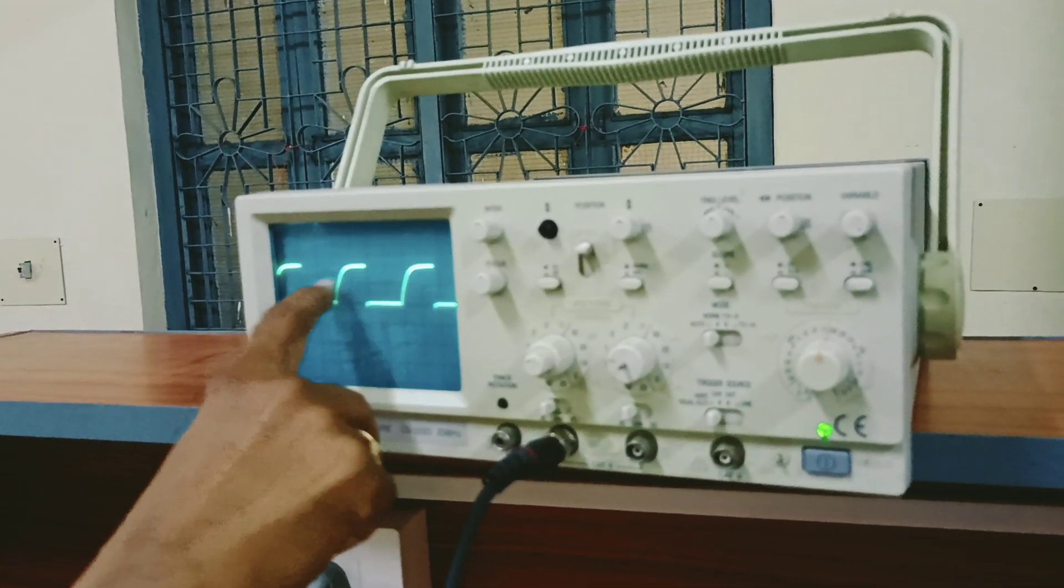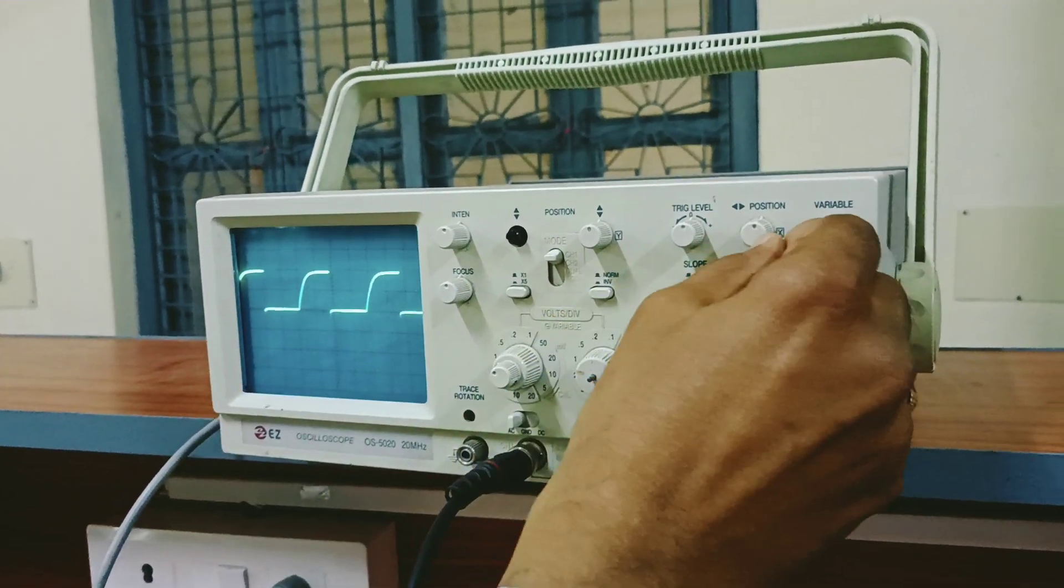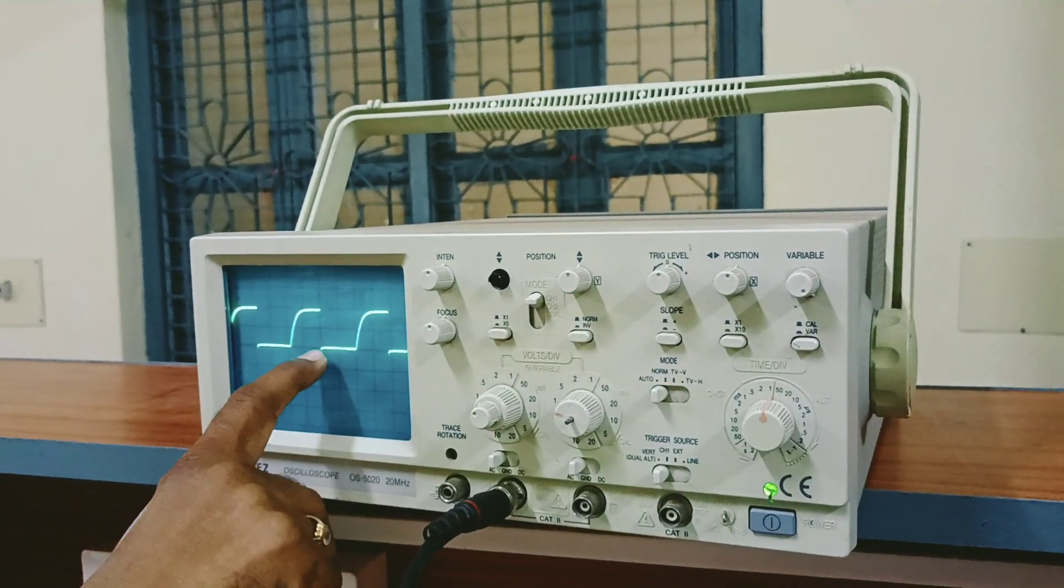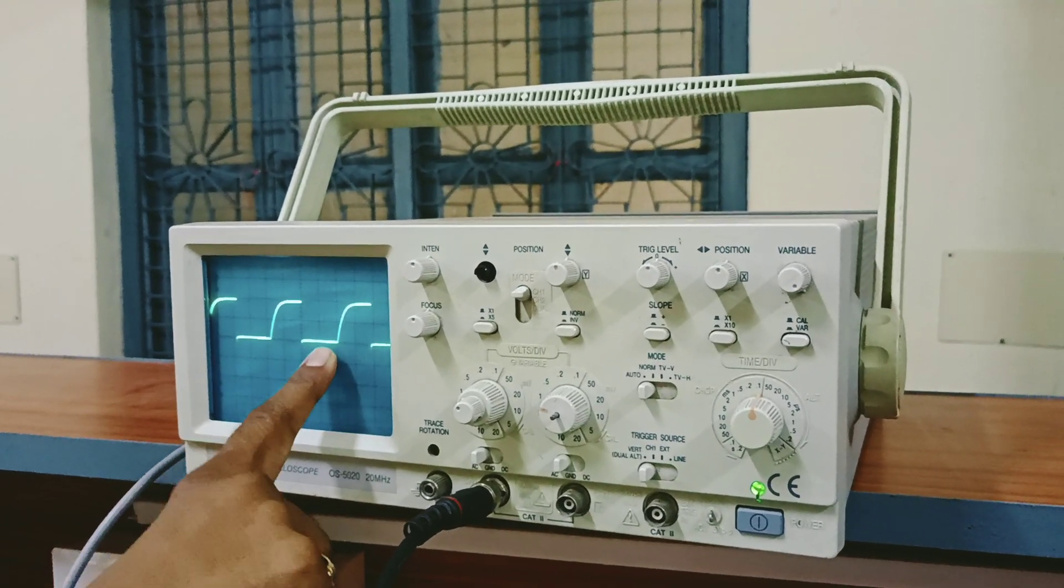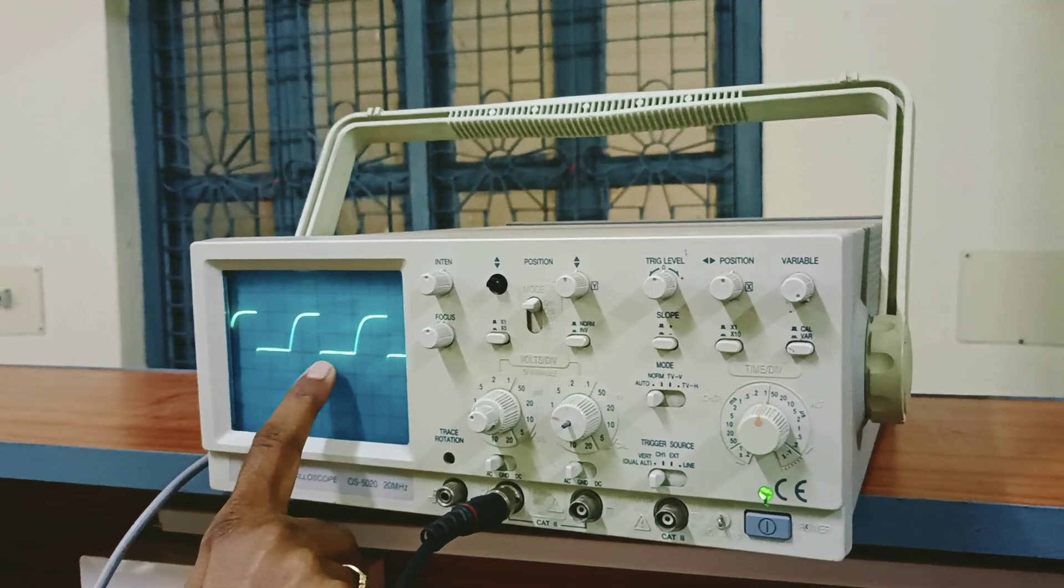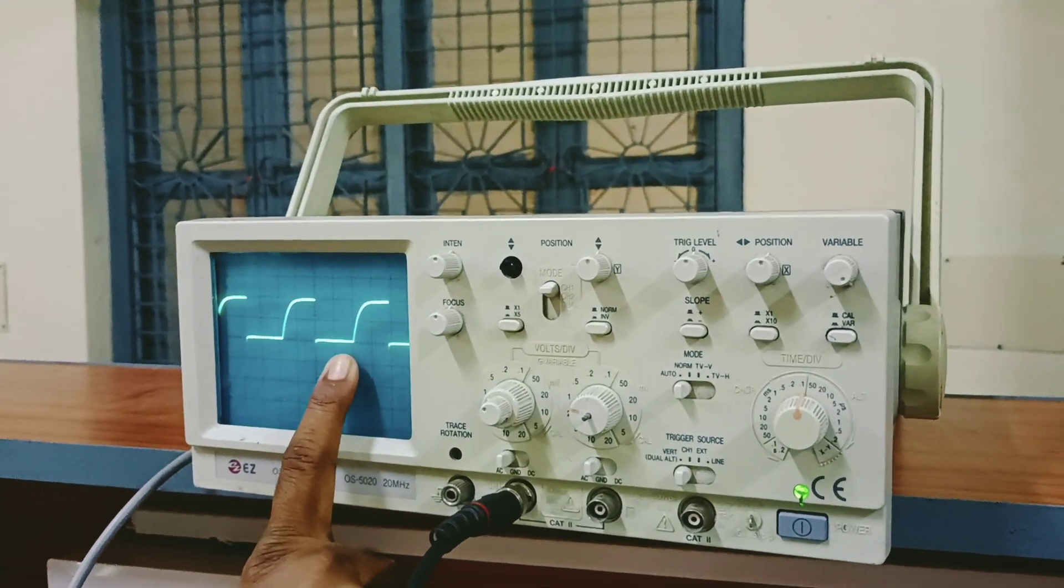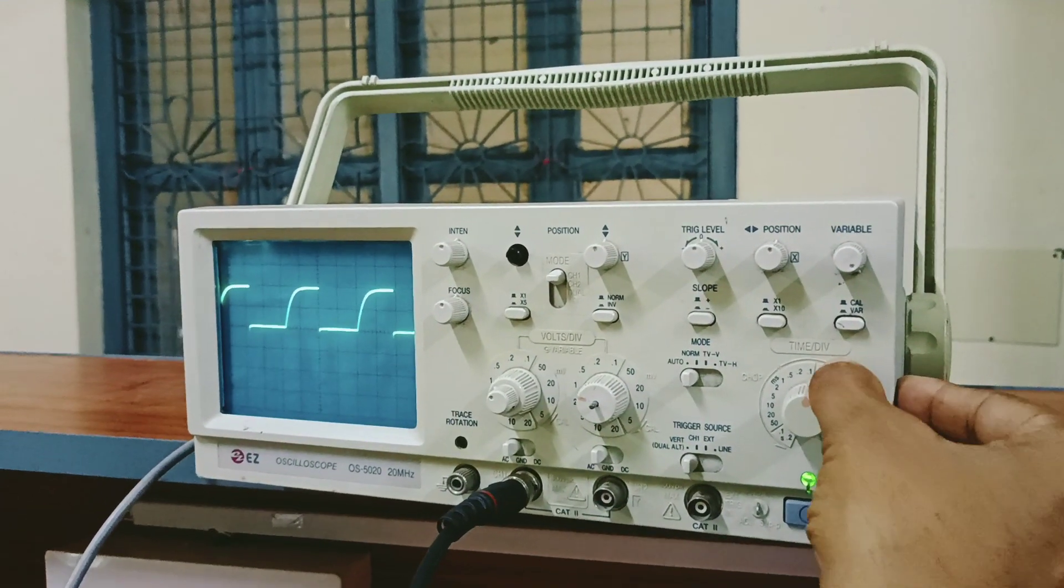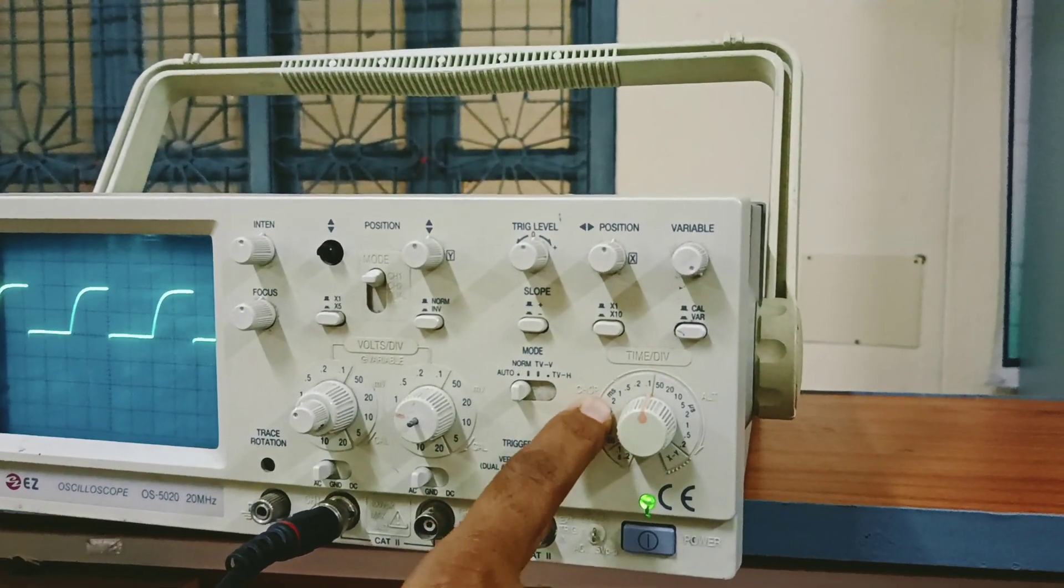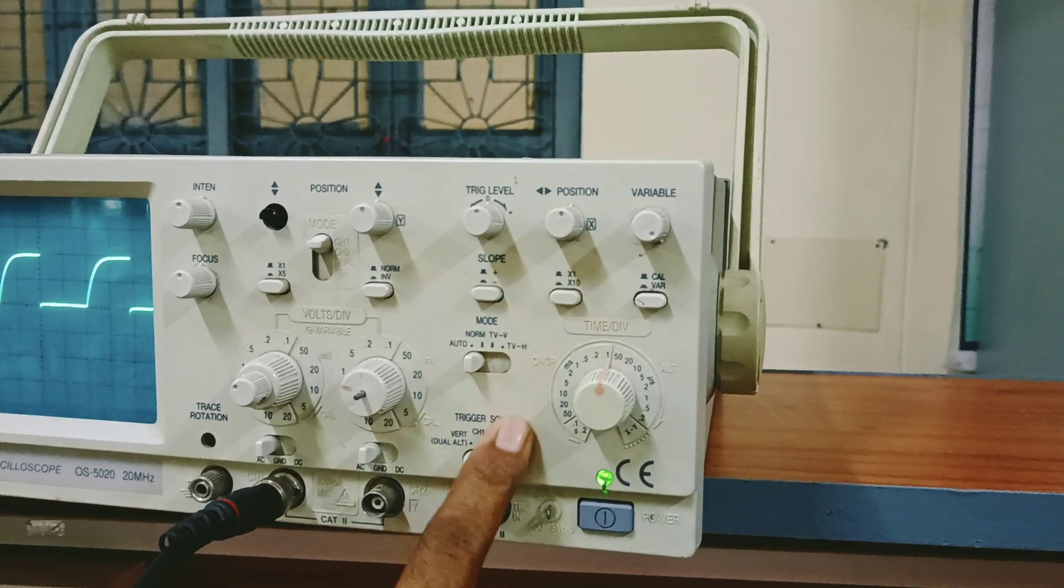Now what I do, just adjust it a little so that let me call this as off time of this square wave. How much I can read is two boxes here.